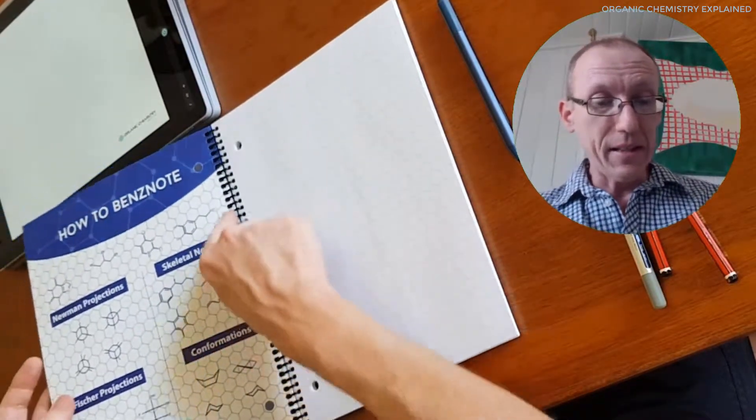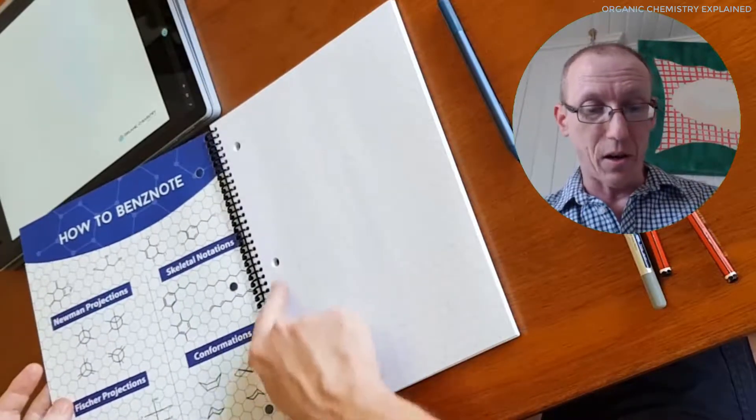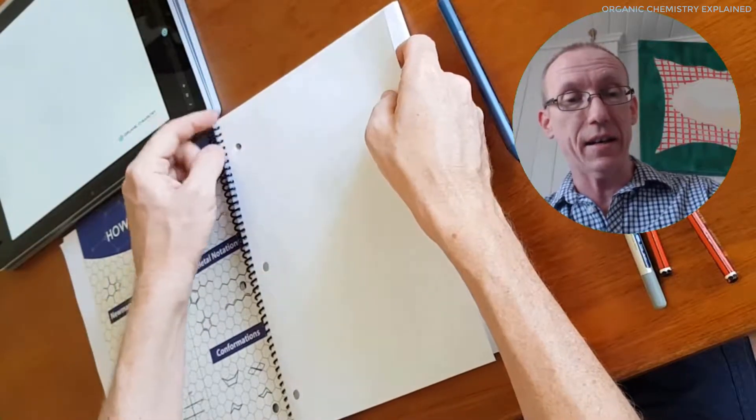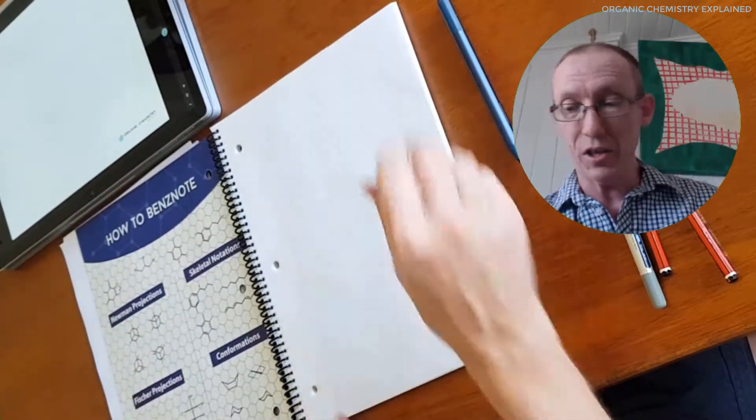Now it is, as I said, spiral bound. It also has hole punch so it's three hole punch and you can tear out, there's a tear out perforation along the edge here.